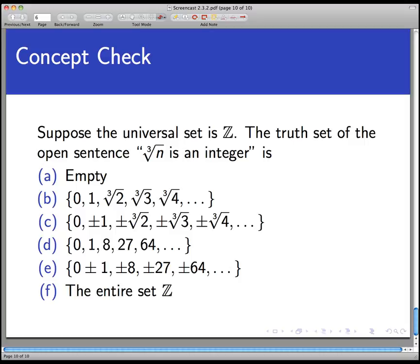Suppose that the universal set is the set of integers, the set of all whole numbers, both positive, negative, and zero. And we're going to look at the open sentence, cube root of n is an integer. So again, n is an integer, but here's an open sentence, cube root of n is an integer. So this is an open sentence because it has this variable in it and the variable is some other integer. So what's the truth set? What is the set of all integers that I could plug in to make this quoted sentence a true statement?